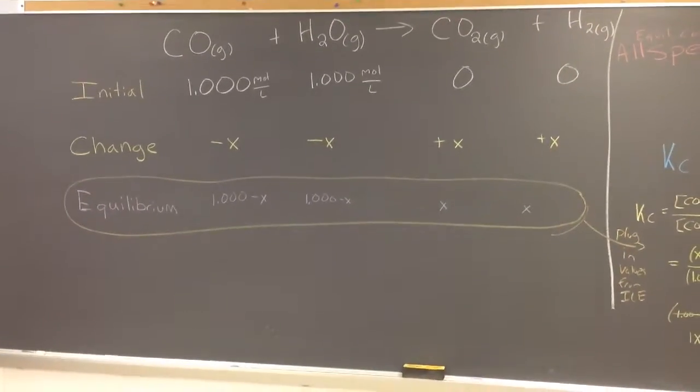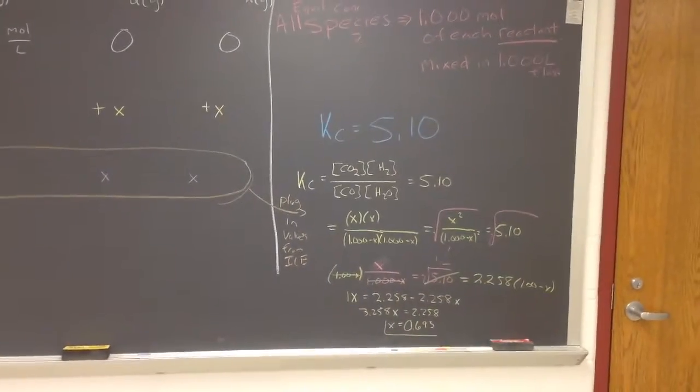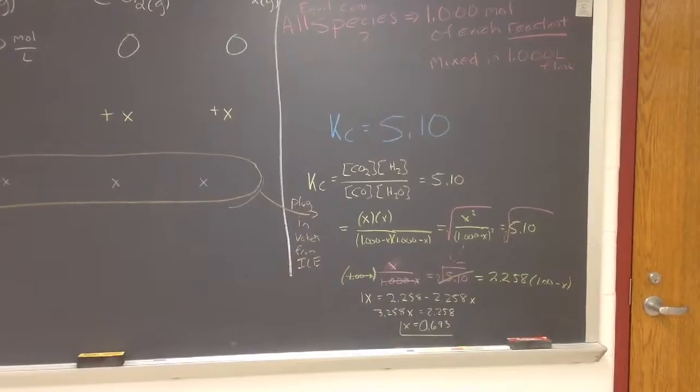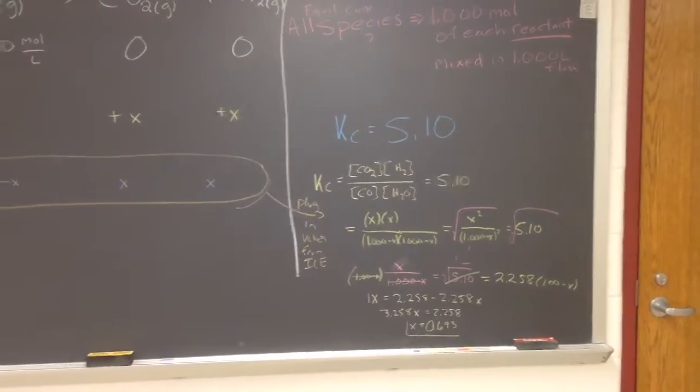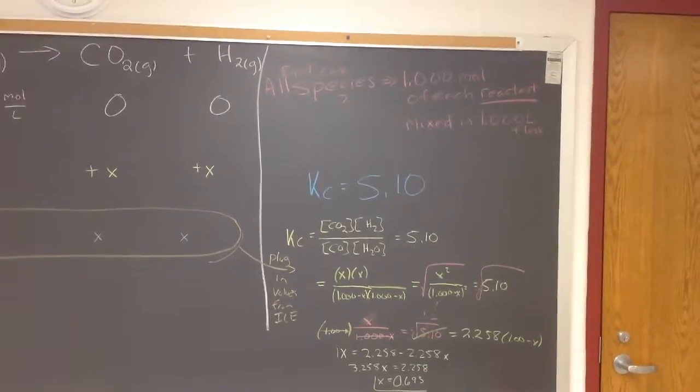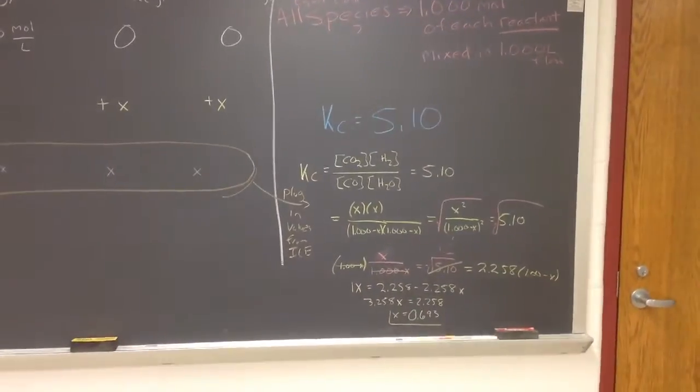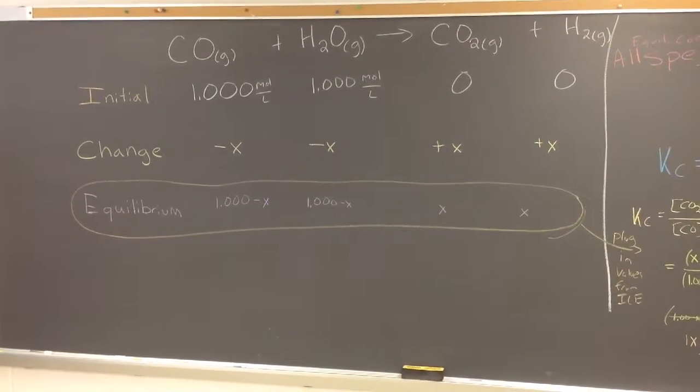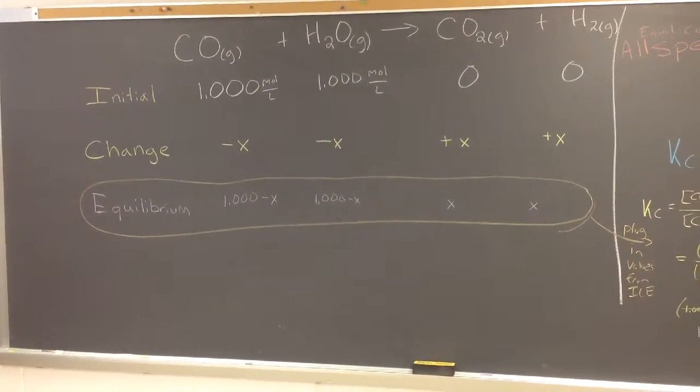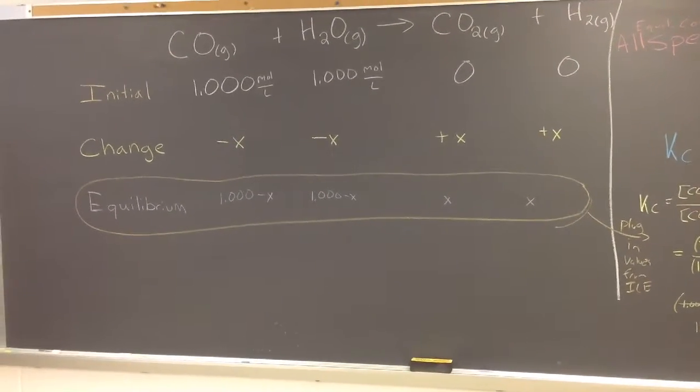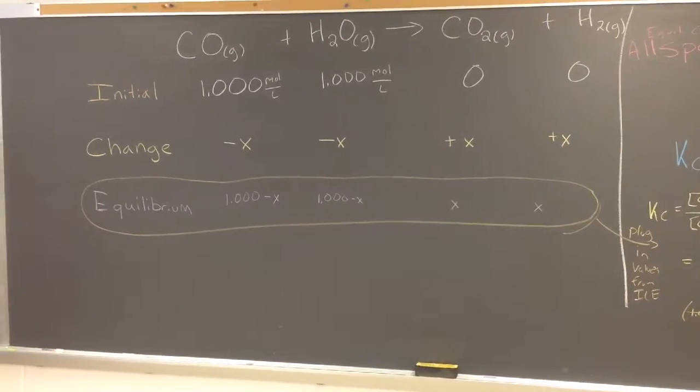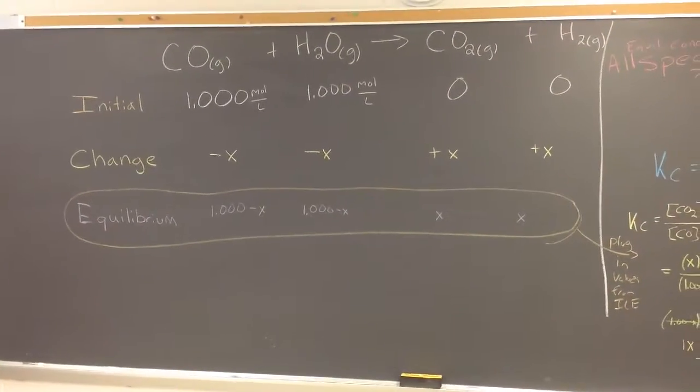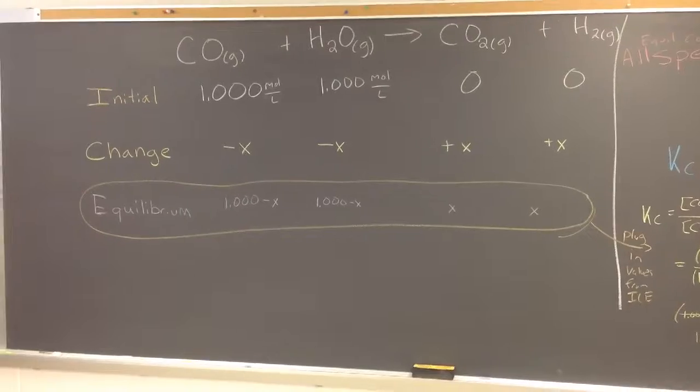Then we should plug those values back in to the equilibrium constant expression and make sure that it equals about 5.1 to double check. So whenever we're asked for something like what are the equilibrium concentrations of all these species, we can't just solve for X and then call it quits. We've got to go through and plug things back in and then double check to make sure that everything's right. And if it doesn't make sense, if it's very far off, we need to stop, come back, and try to figure out where we made an error. So the only way to get good at doing ice problems is to do ice problems, is to do a lot of them.